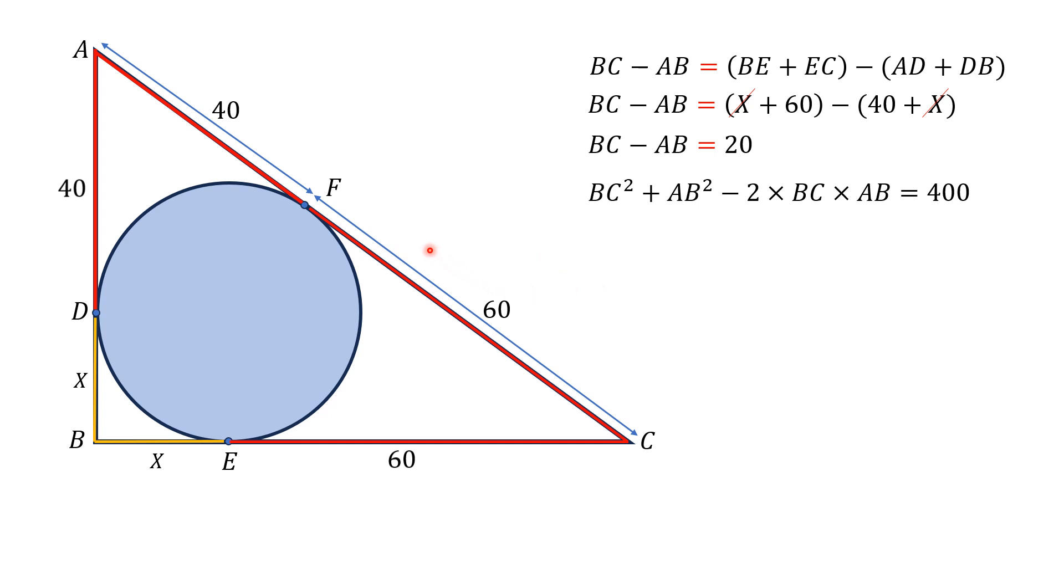So this equation will reduce to 10,000 minus 2BC times AB equals 400. And from here, doing some simplifications, we will get 2 times BC times AB equals 9,600.